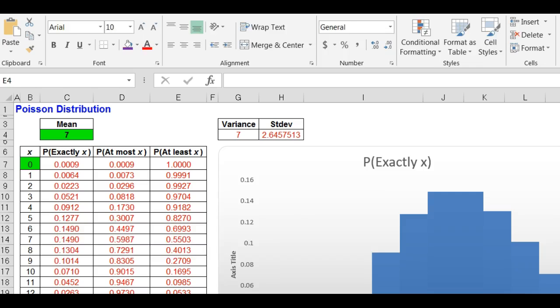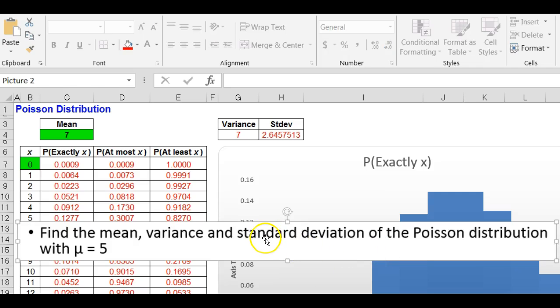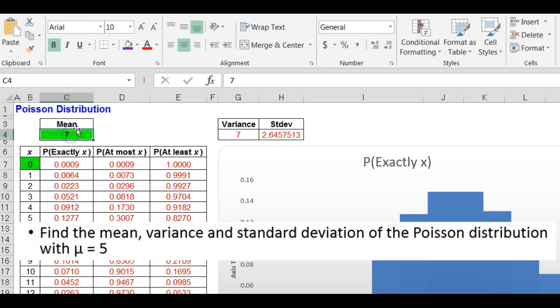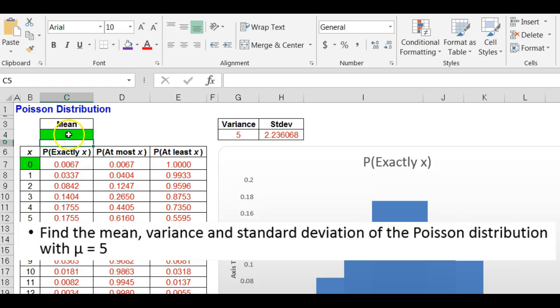Let's look at that first question. Here is my first question: Find the mean, variance, and standard deviation of the Poisson distribution with a mean of five. Change my mean to five, and you will notice that you already have the mean. The mean is five. With the Poisson distribution, the mean and the variance are the same. So the mean is five, the variance is five.